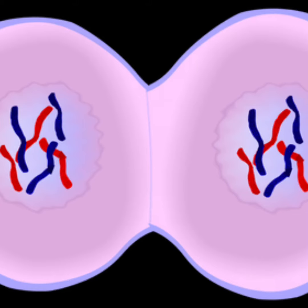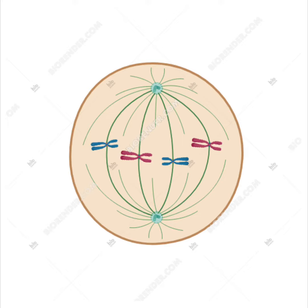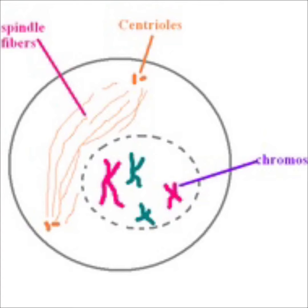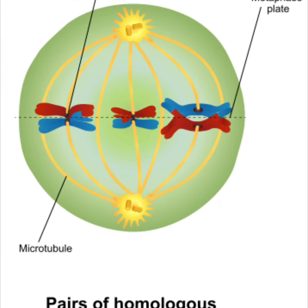There is also interphase, telophase, and even pro-metaphase. There are four main stages though — to remember them, use the mnemonic 'please make a taco.' Prophase is the first stage of mitosis. Metaphase is when the chromosomes line up.